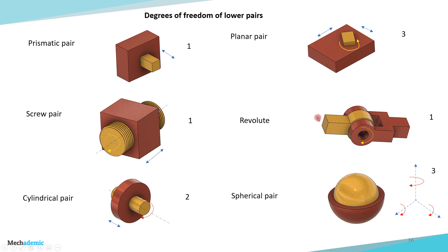The revolute joint allows only relative rotation between one part and the other — only 1 degree of freedom is allowed. This is a hinge joint or knuckle joint, which is very common in machine components.